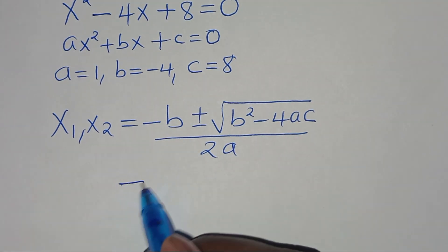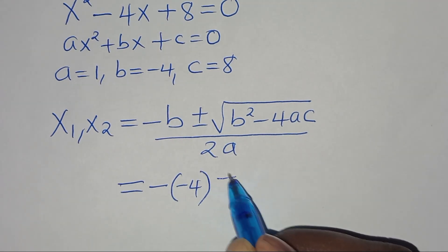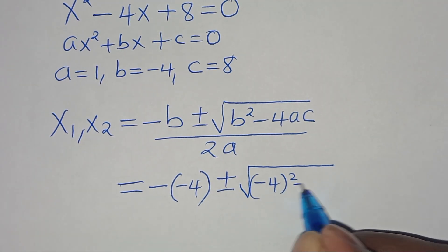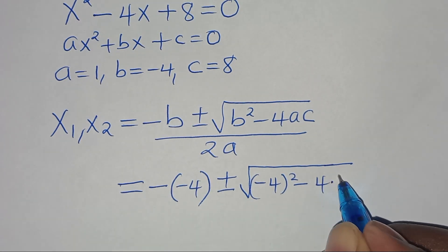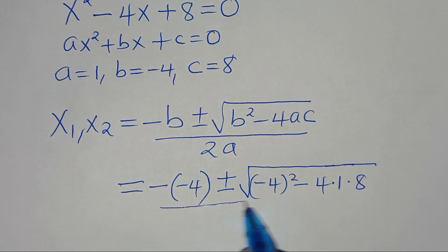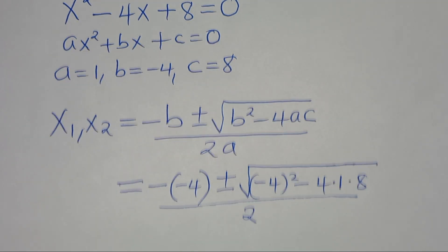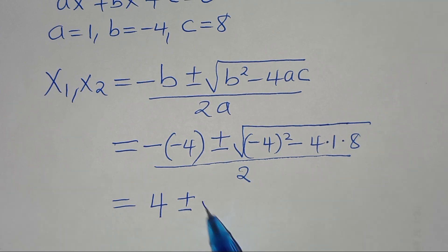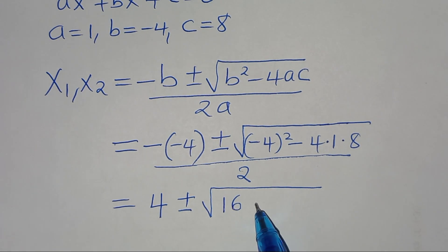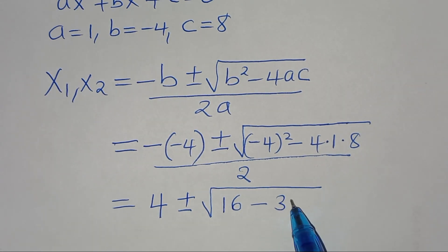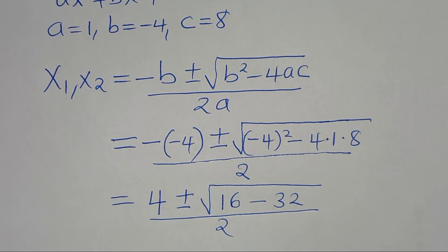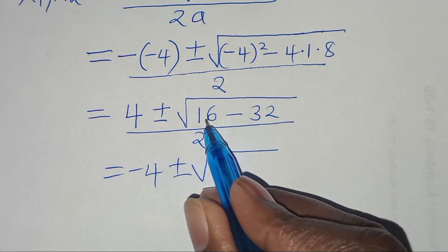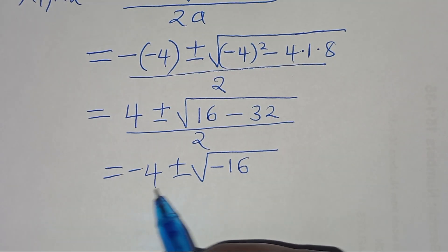We get negative (−4) plus or minus the square root of (−4)² minus 4 times 1 times 8, all divided by 2. This simplifies to 4 plus or minus the square root of 16 minus 32, which is the square root of negative 16, all over 2.